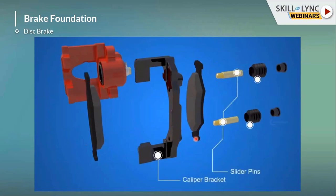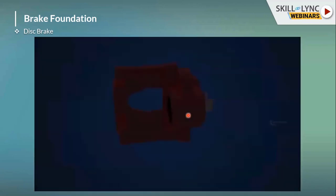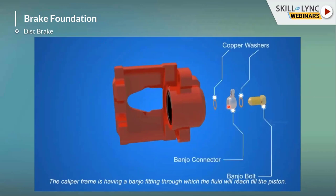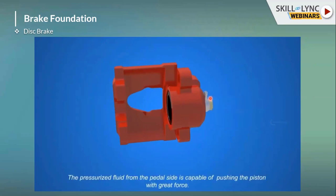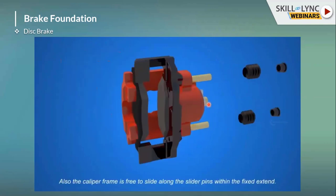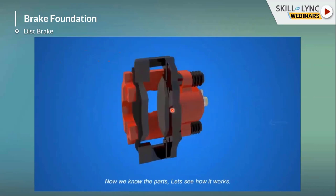These are the caliper bracket pins and boots, the inner brake pad and the outer brake pad, the caliper frame, and the piston. The brake pads are mounted on the pistons. The pressure we apply — whether pneumatic or hydraulic — comes through the port to the piston. When the brake is applied, the brake pad rubs against the rotating disc.